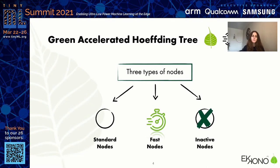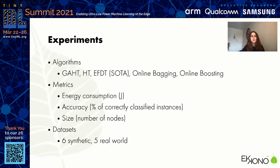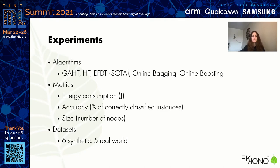To check how our solution compares to state-of-the-art ensembles and Hoeffding trees, we have created a set of experiments. We compare all these algorithms in terms of energy consumption, accuracy as the percentage of correctly classified instances, and size — the number of nodes of the tree — to check their memory requirements. We have done that on six synthetic datasets and five real-world datasets.